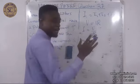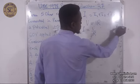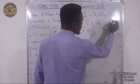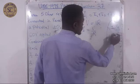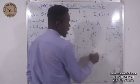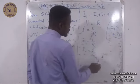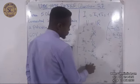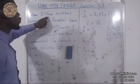From the diagram, we have R1, R2, and R3. The current I1 is equal to V over R1, I2 is equal to V over R2, and I3 is equal to V over R3.